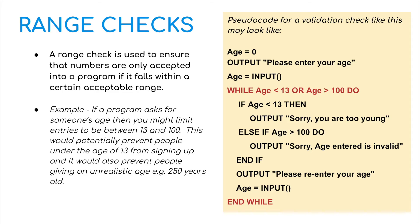Here is some pseudocode that would fulfill these requirements. We set the age first to zero, then output a message: 'Please enter your age.' The age is then inputted by the user. While the age is less than 13 or greater than 100, output 'Sorry, you are too young' or 'Sorry, the age entered is invalid,' then 'Please re-enter your age,' and the age is inputted again. So we have a while loop to make sure somebody enters an age between 13 and 100 years old.